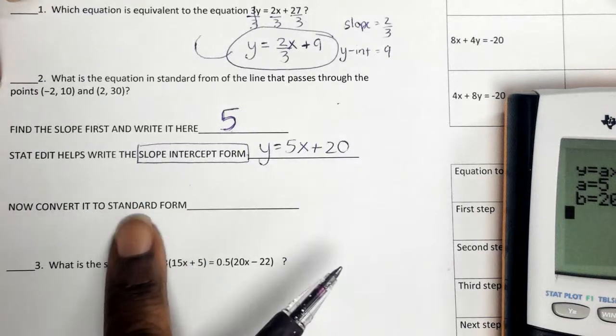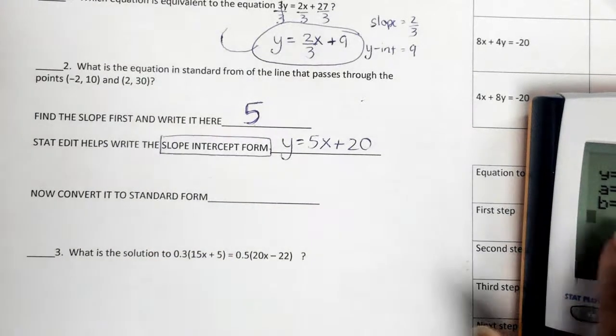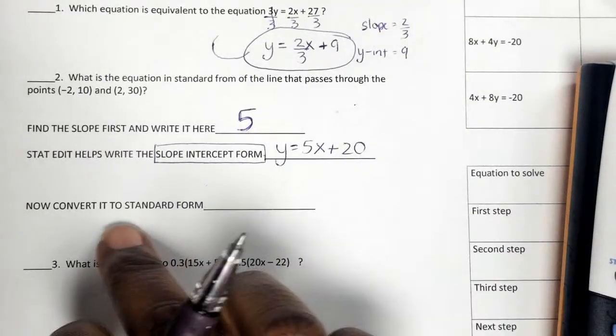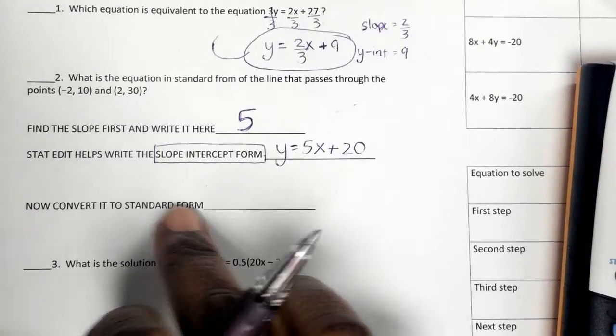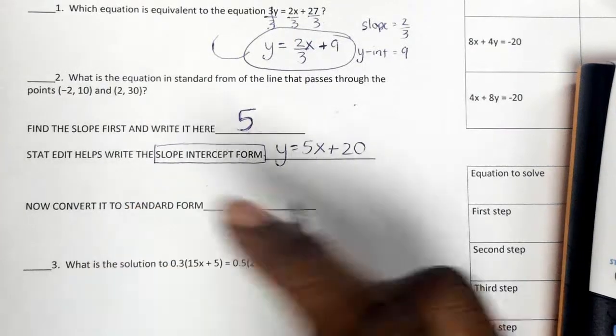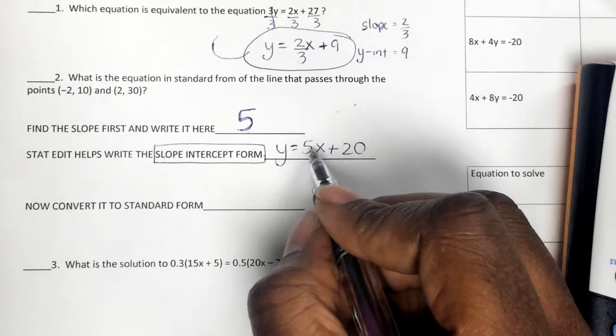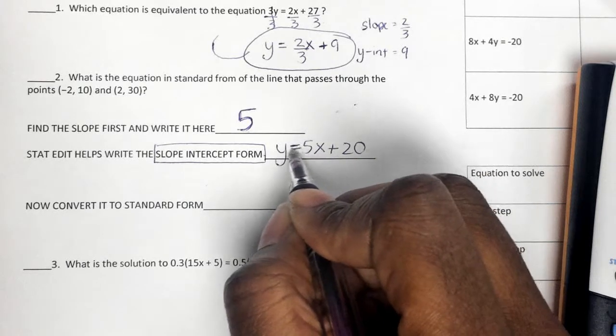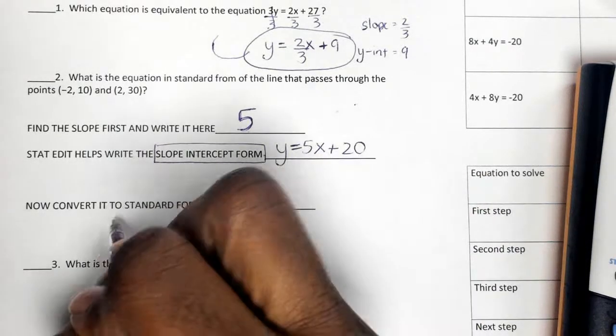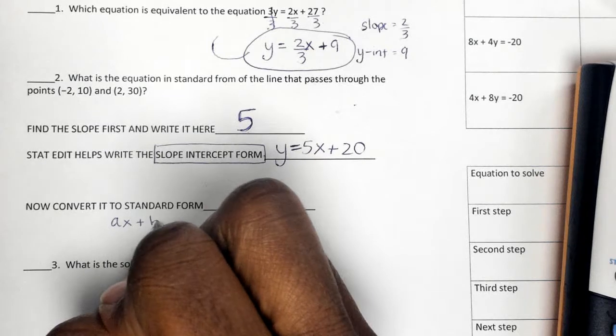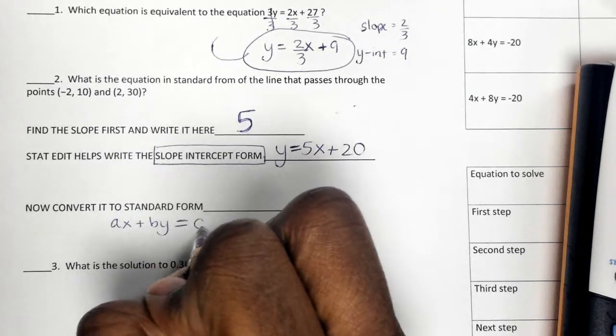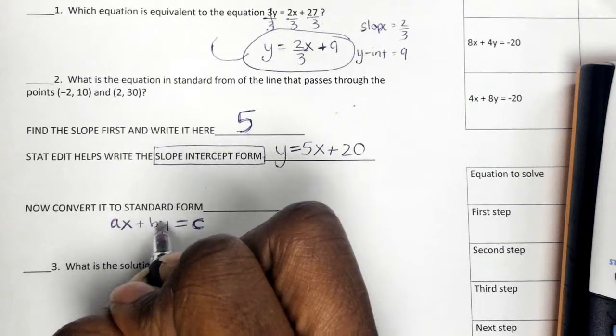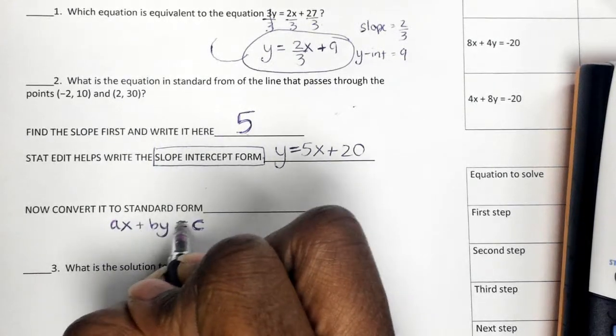Now it says convert it to standard form. Because remember, the calculator can always give you slope-intercept form. But what if your answer choices are all in standard? That's when you have to recognize that slope-intercept form, the x and the y are on opposite sides of the equal. But with standard form, you have to notice that the x and the y are now on the same side of the equals. Your x is here, whatever coefficient, and the y is on the same side of the equals.